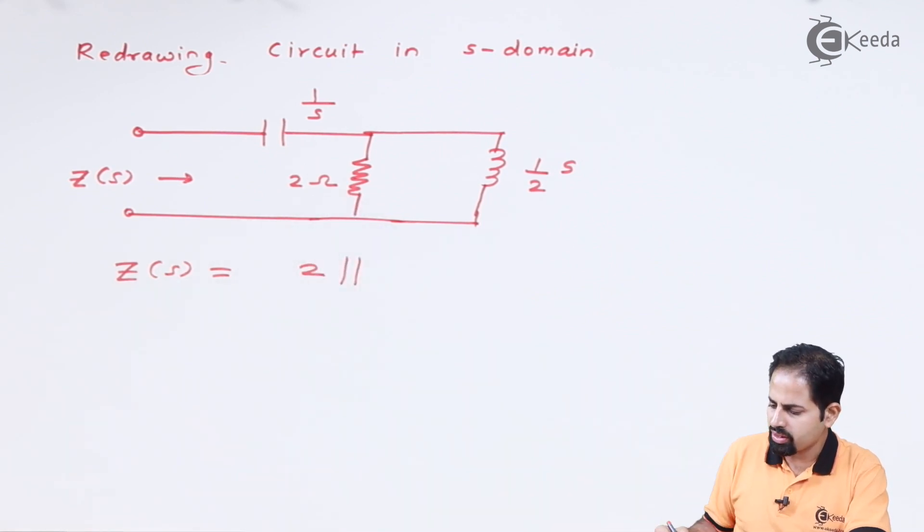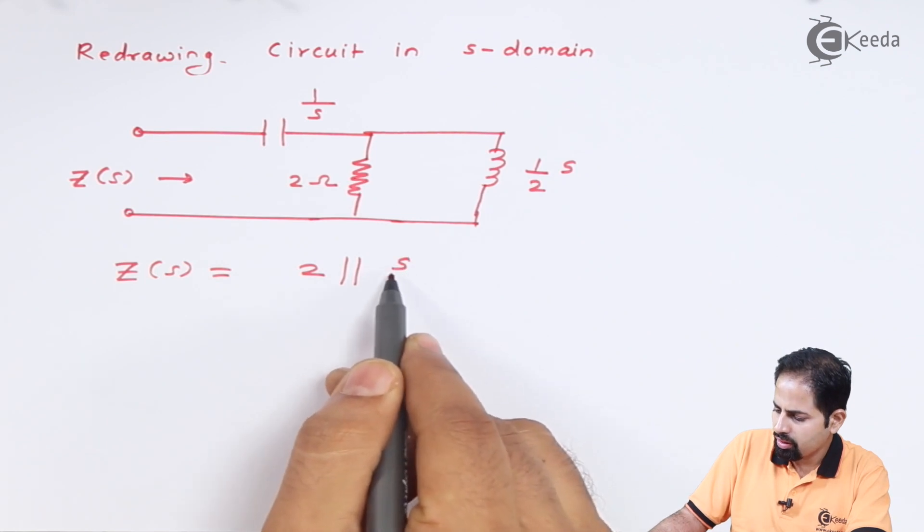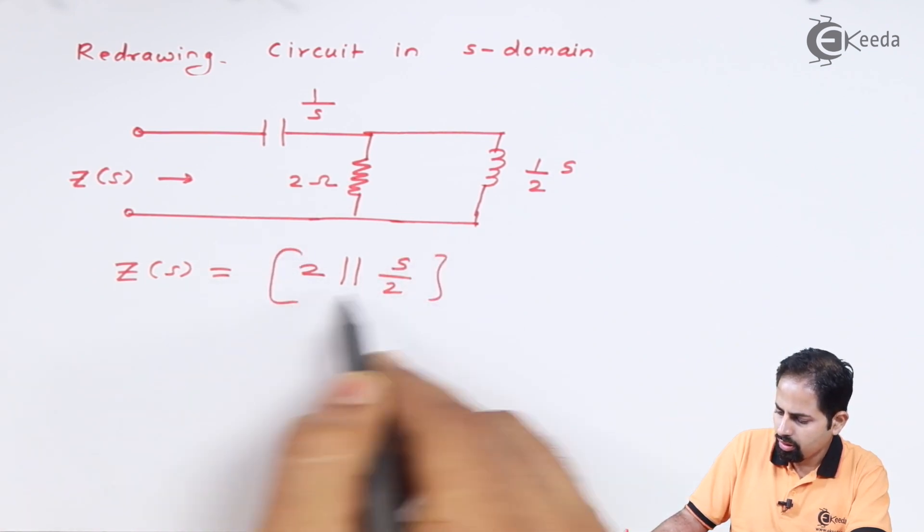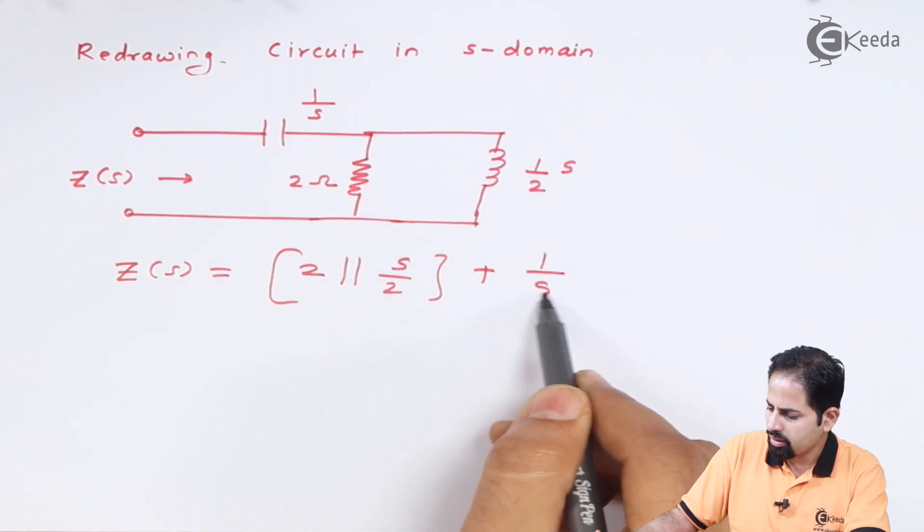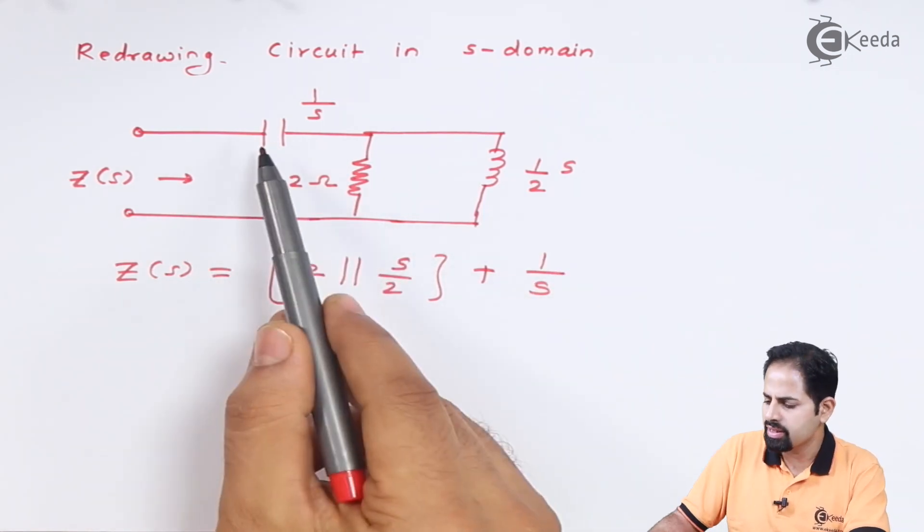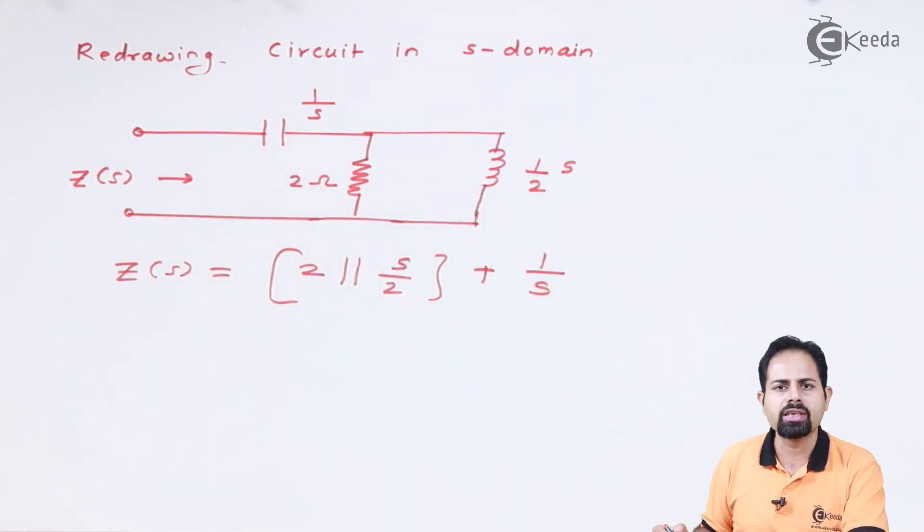This 2 ohm resistance is parallel with this s/2 impedance, which is to be added with this 1/s impedance, because we have replaced capacitors and inductors with their respective impedances.